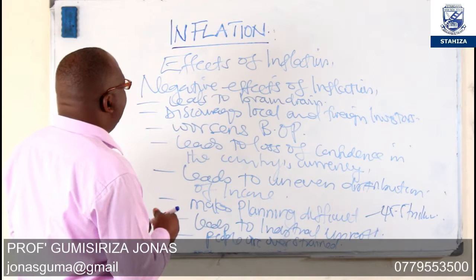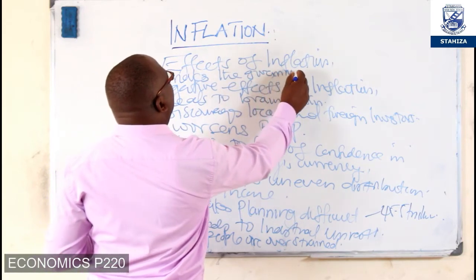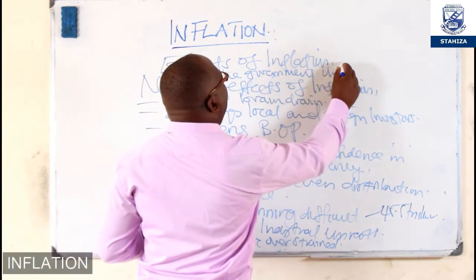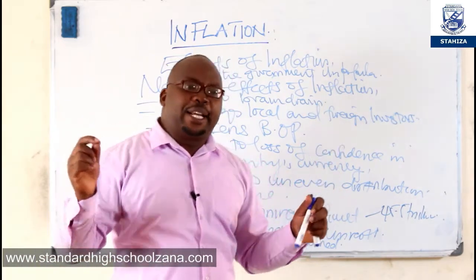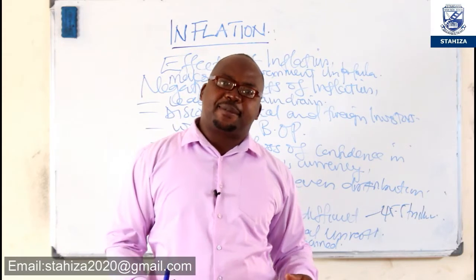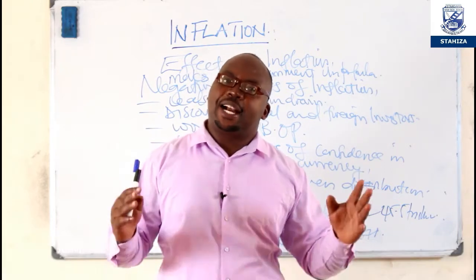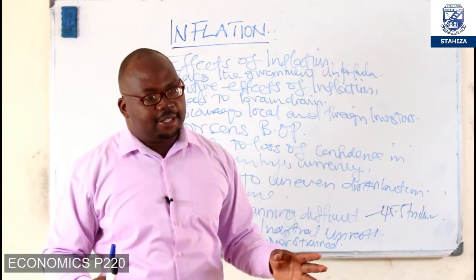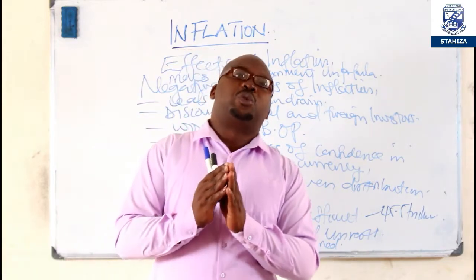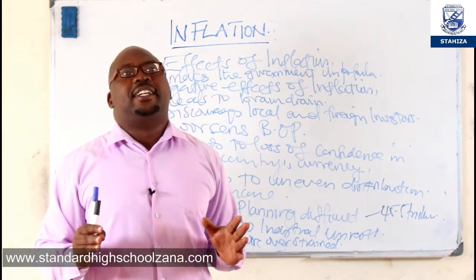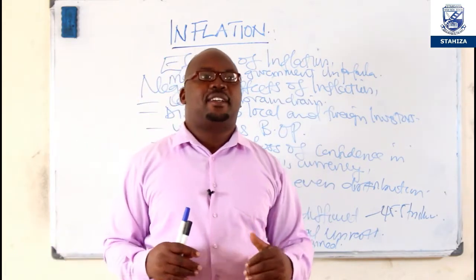Inflation makes the government unpopular. People always blame the government for not putting in measures to control inflation — citizens blame the government for increased prices and the rising cost of living. That puts the government under tension, and the number of people opposing the government increases, because people believe that cutting down rising prices of goods and services is the responsibility of the government.